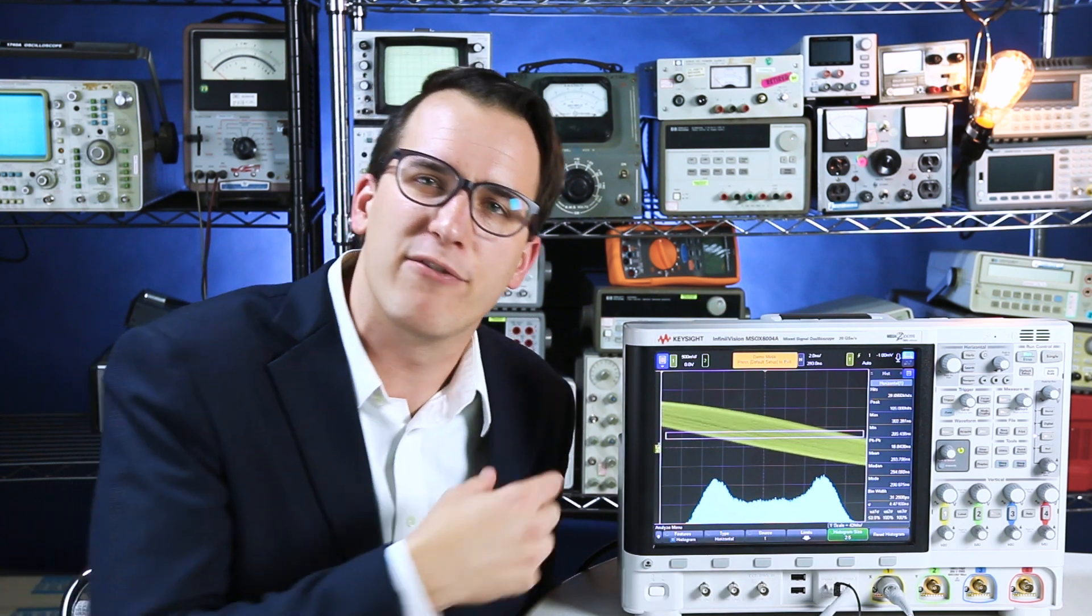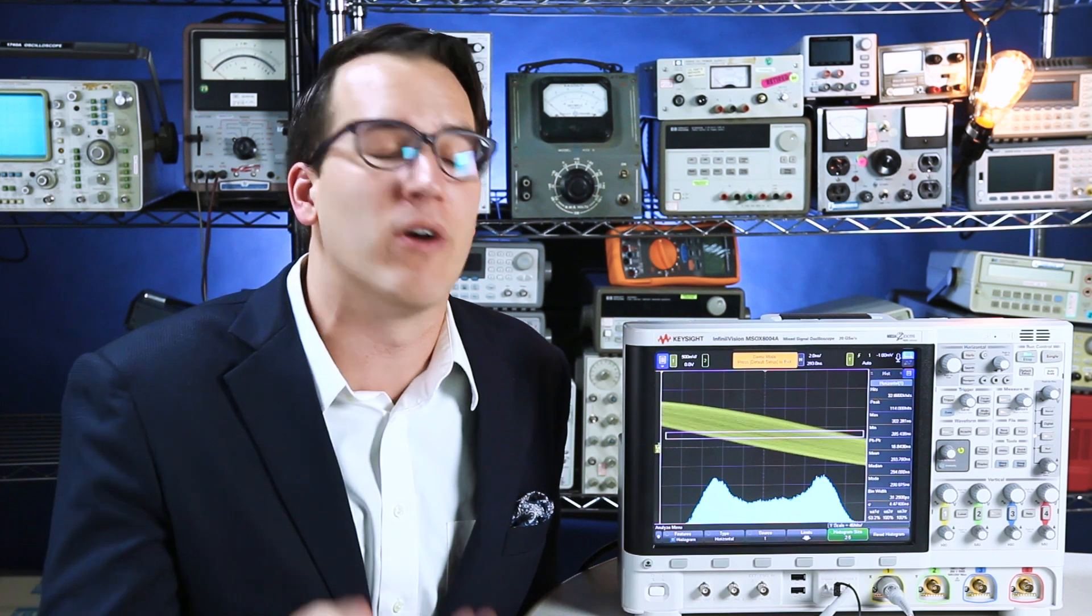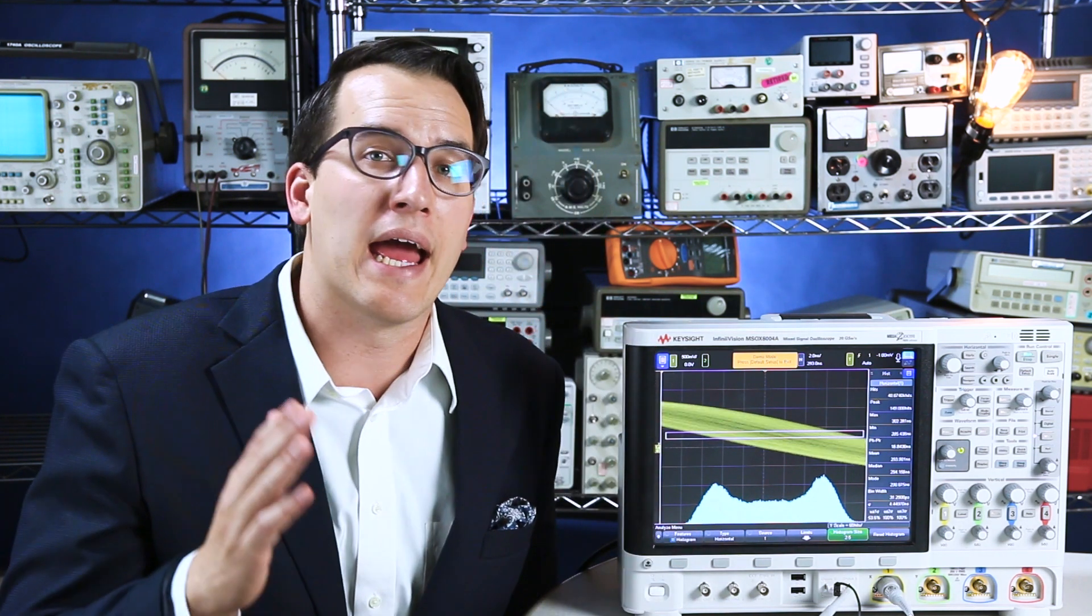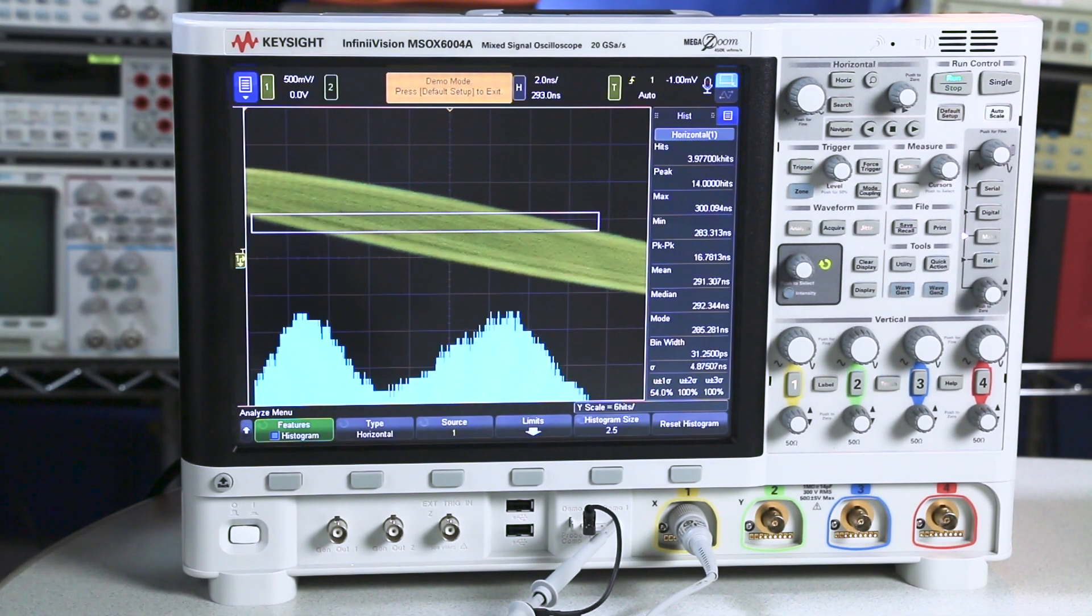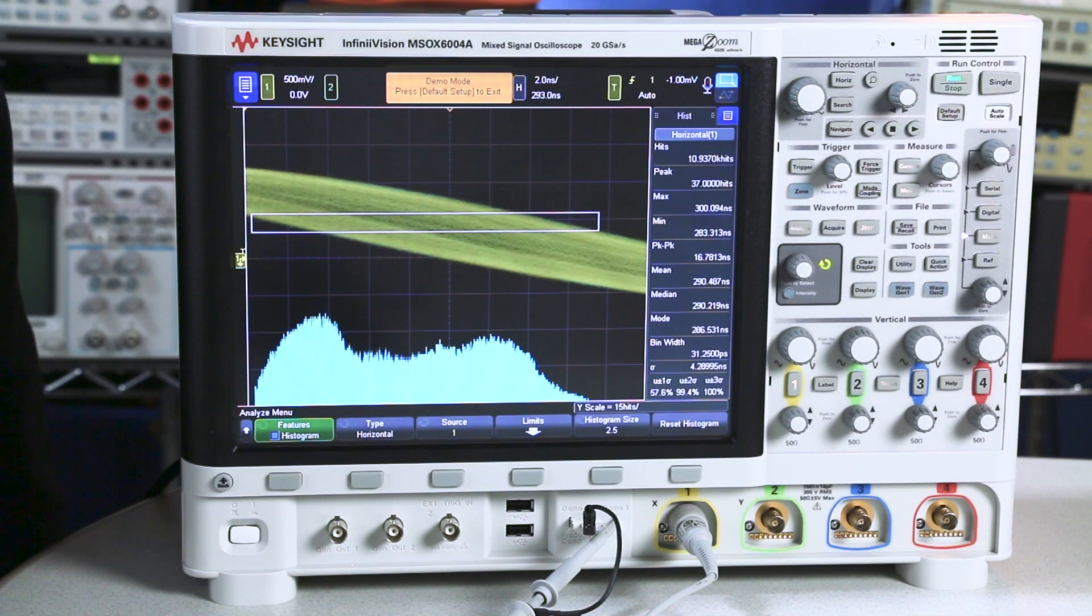The reason I want the box pretty skinny for my histogram is because the way it works is anytime the signal edge goes through that box, it's going to plot it to the histogram. And I'm slowly building up a probability distribution function of where that edge is going to align in time.